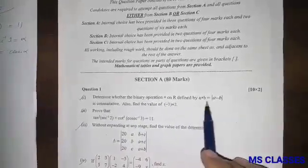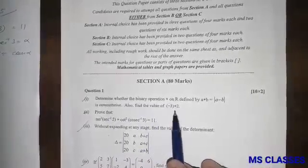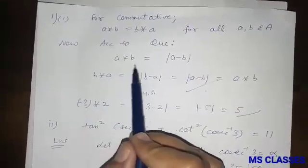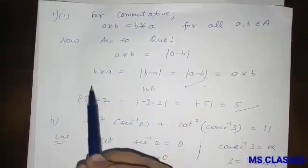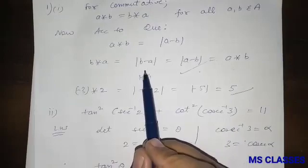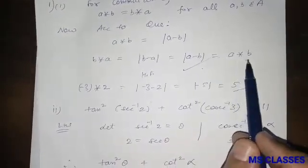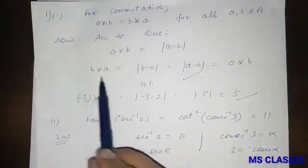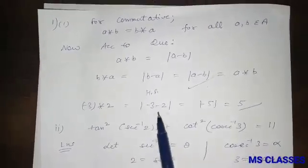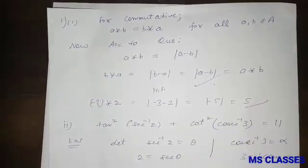According to the question, A into B is mod of A minus B. To prove it commutative, B into A equals mod of B minus A, which equals mod of A minus B, which equals A into B. Therefore it is commutative. For the second part, minus 3 into 2 equals mod of minus 3 minus 2, which is mod of minus 5, equals 5. So 5 is the correct answer.